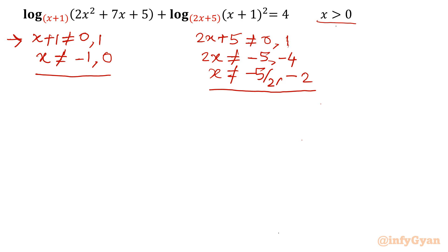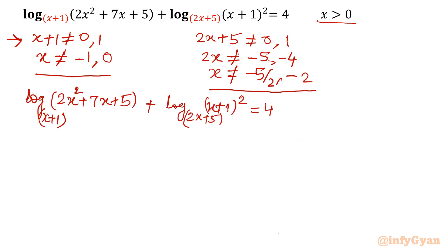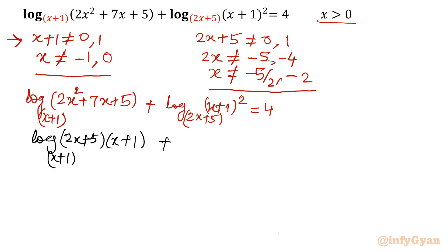Let us solve this problem. We can find the factors of 2x² + 7x + 5, which are (2x+5) and (x+1). So I will write log of (2x+5)(x+1) with base (x+1), plus log of (x+1)² with base (2x+5), equal to 4.